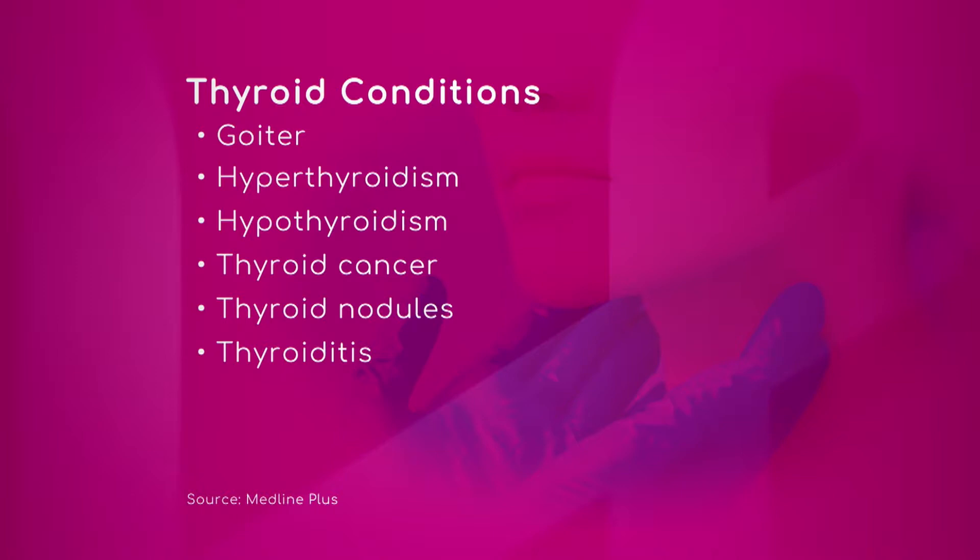Hypothyroidism is a condition where the thyroid is underproducing the hormone. In this case, the pituitary will ask the thyroid to produce more. It can be from a variety of reasons, but there are also autoimmune conditions that will result in hypothyroidism.